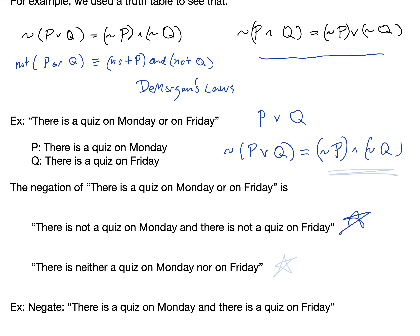Or we could write it as: there is neither a quiz on Monday nor on Friday. Writing it either way would work — both are logically equivalent to not p and not q.